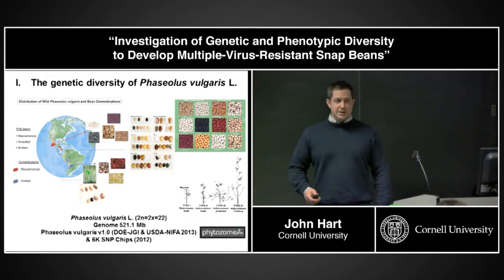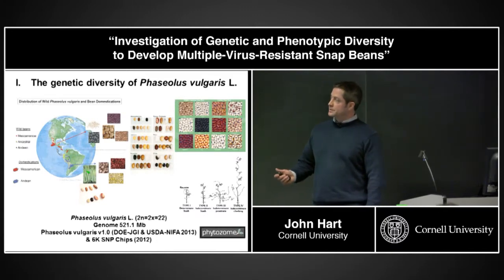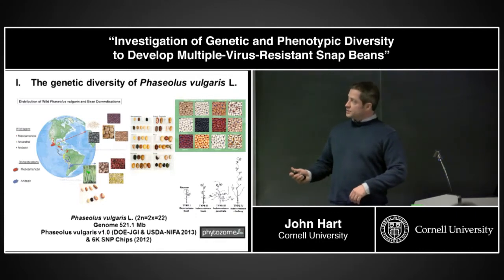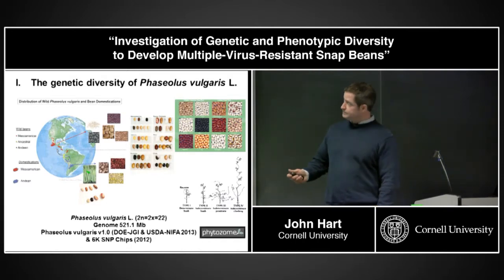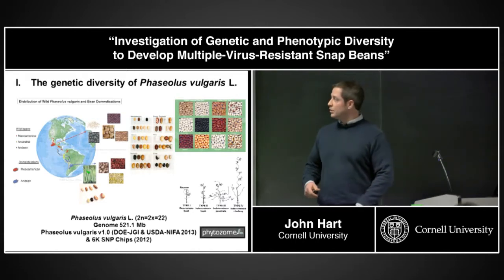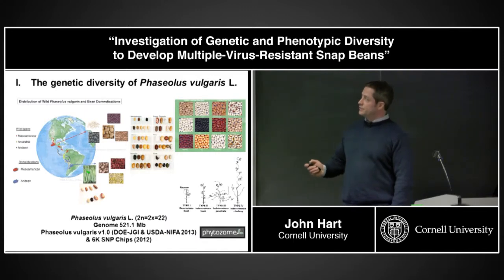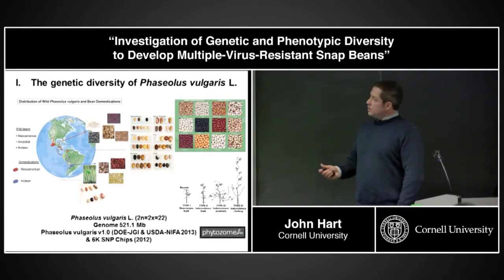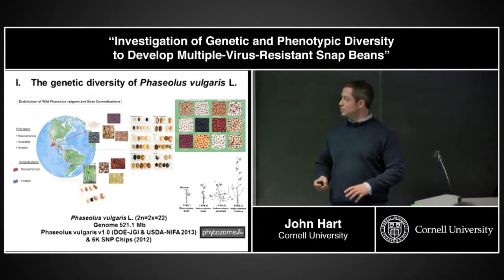The domestication of this wild progenitor took place at least two different times — once in southern Mexico and once in the Andean region in Peru, about 5,000 to 8,000 years ago. There's also potentially an ancestral population in Venezuela and Colombia. These domestication events led early agriculturalists to further select and diversify this genetic diversity into different seed types appreciated for eating quality and different plant types with varying phenology and complementation with other crops.